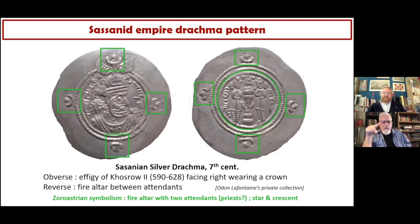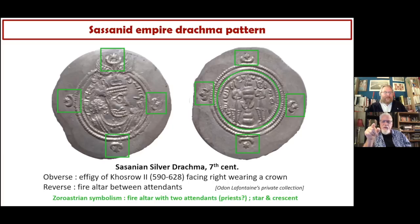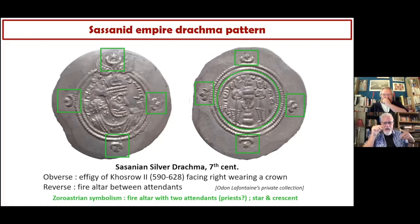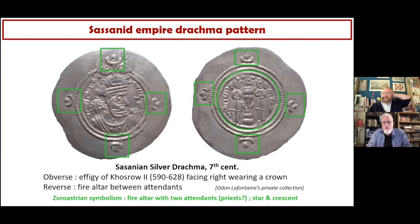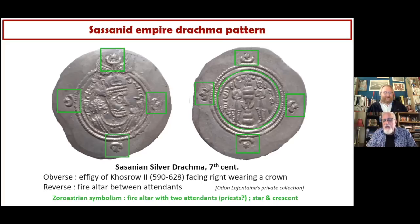Just so people don't get confused — this has been brought up before — he is emphasizing the crescent and star, but this is not a Muslim symbol. Muslims have written to me saying it proves this is a Muslim coin, but it is not. It is a Sassanid political symbol, first introduced in the fourth century AD. The first time we see Muslims incorporating that symbol is not until the 1800s, when the Ottomans introduced it, and it was not used on a flag until the 20th century. So this has nothing to do with Islam.